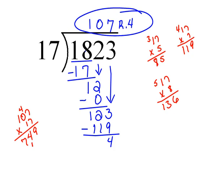So 1 times 7 is 7. 1 times 0 is 0. And 1 times 1 is 1. And then we add. So 9, this would be 11, 8, 1.